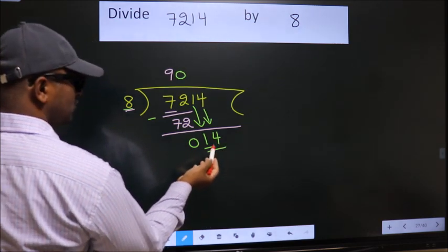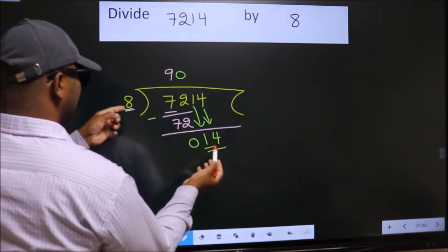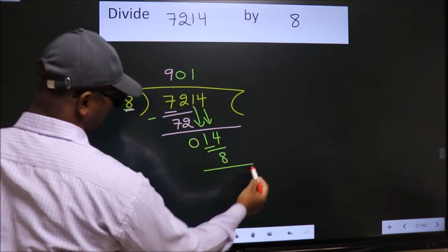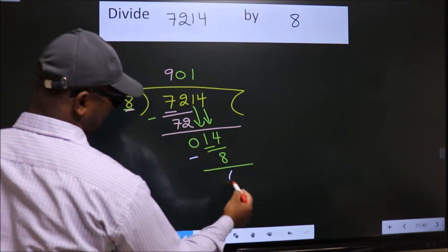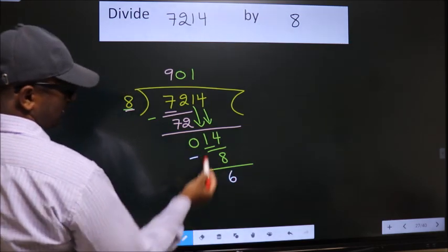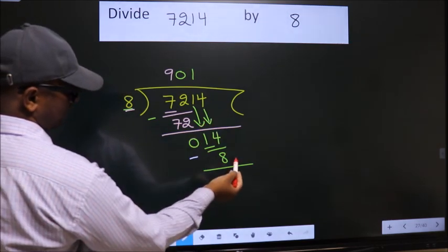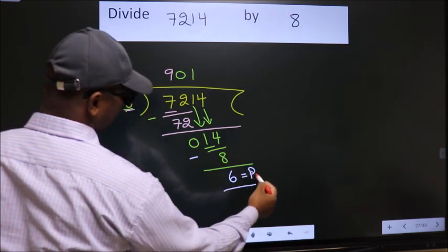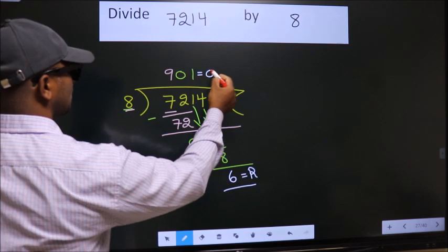A number close to 14 in the 8 table is 8 once 8. Now we subtract, we get 6. No more numbers to bring it down, so we stop here. This is our remainder. This is our quotient.